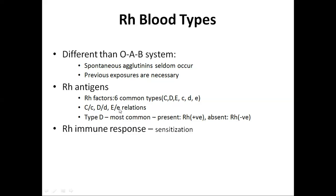The most common Rh antigen type is D. If the D antigen is present in the patient's blood, the person is Rh positive; if absent, they are Rh negative. In Rh immune response sensitization, if RBCs containing Rh factors are injected into an Rh negative person, anti-Rh antibodies develop slowly, reaching maximum concentration about two to four months later. This immune response is greater in some people than others, and with multiple exposures an Rh negative person will eventually become sensitized.